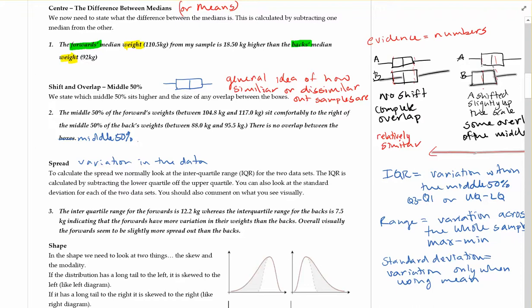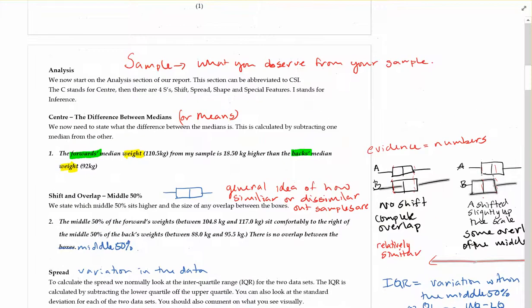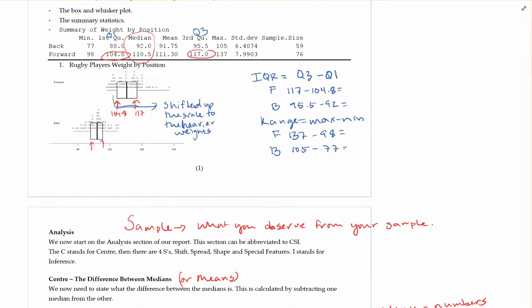So more variation, I might say here, of the middle 50% in their weights than the backs. Overall, visually, the forwards seem to be slightly more spread out than the backs. If you wanted to, here you could also add in the range comments, so I notice that the range for the forwards is, you know, whatever it works out to be, and the range for the backs works out to be this as well. And you can kind of tell that you've got potentially an outlier or something unusual to talk about here with the big data point.